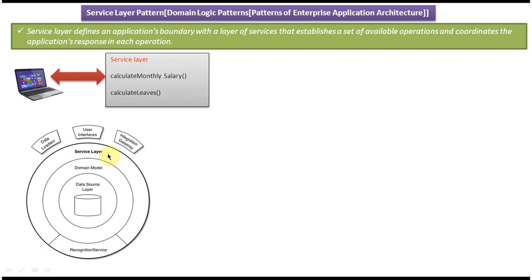The service layer is an entry point. For example, a service layer in a web application might have a 'calculate monthly salary' method and a 'calculate leave' method. When a client wants to communicate with that application, it calls the service layer and its methods. That method in turn calls some business classes, which call database queries.